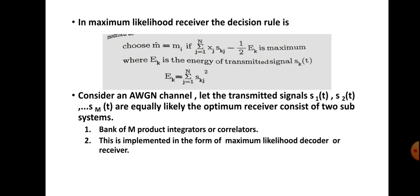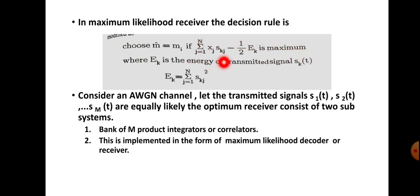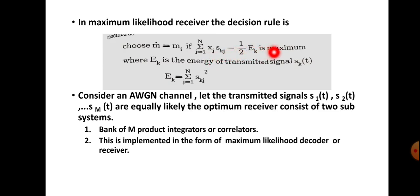The modified decision rule is: choose m-cap equal to m-i if sigma j equals 1 to N of x-j times s-k-j minus one-half e-k is maximum. So this symbol is selected according to that decision rule, which involves the summation minus one-half e-k.